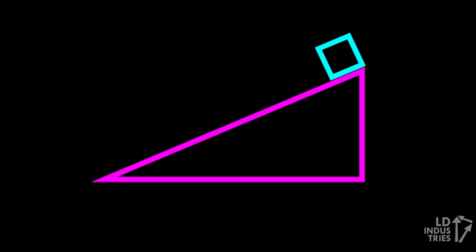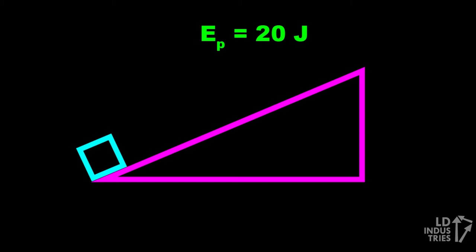Let's say I have a box at rest on the top of a frictionless hill, and let's say the box has a gravitational potential energy of 20 joules. If I let go of the box and it slides down the hill, how much kinetic energy will the box have at the bottom of the hill?